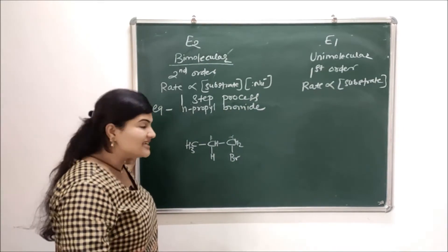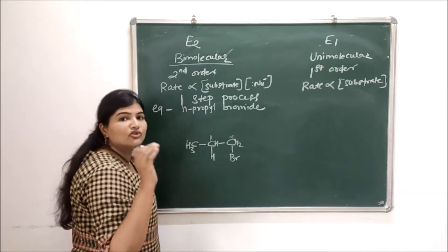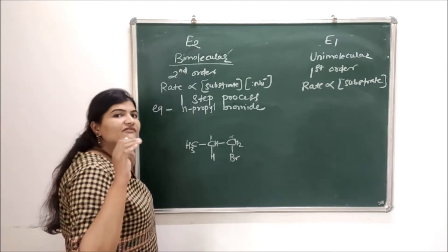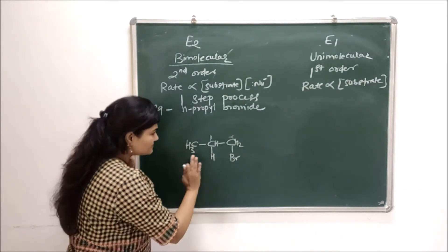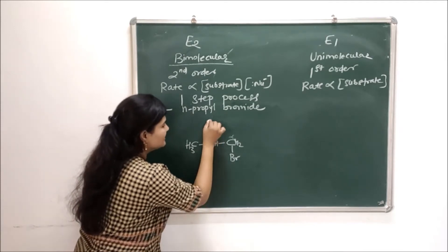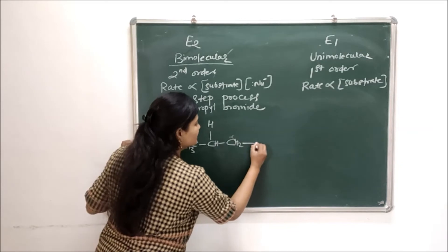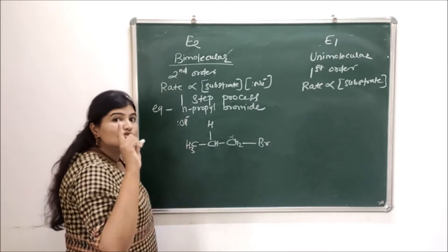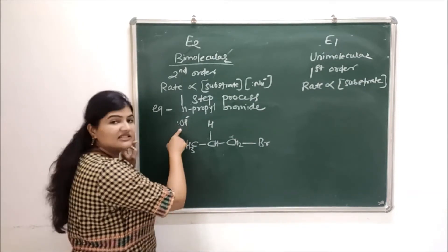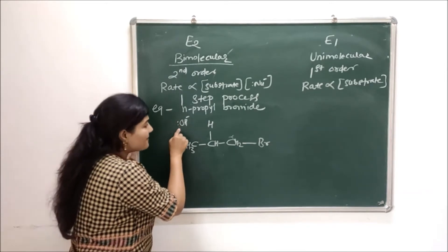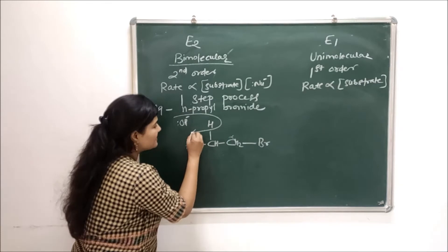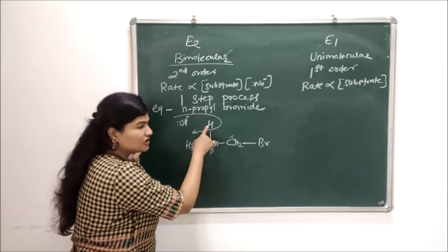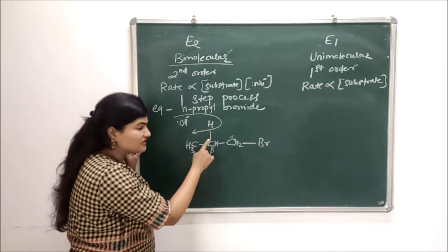In that single step, abstraction of the proton from the beta carbon and removal of halogen from the alpha carbon occur simultaneously. The OH minus nucleophile — whose concentration also matters in the reaction — comes and abstracts the proton from the beta carbon. When I say proton, H plus goes with the OH minus, not the electrons. So those electrons are retained on the beta carbon.